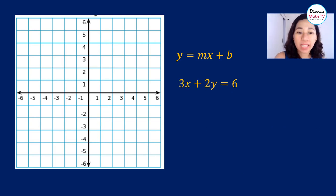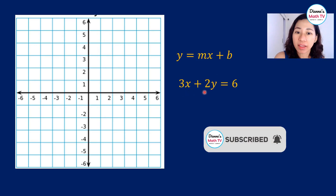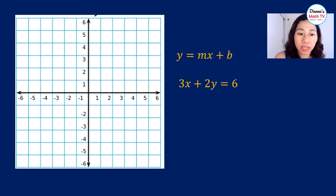Alright. So for our last example, we want to graph 3x plus 2y is equal to 6. Now take note here that this is not in slope-intercept form. What form is this again? 3x plus 2y is equal to 6. This is in standard form. So what we need to do is to first convert it to slope-intercept form. So if you want to review on that, I have a video for that. Again, you can click on the card above.